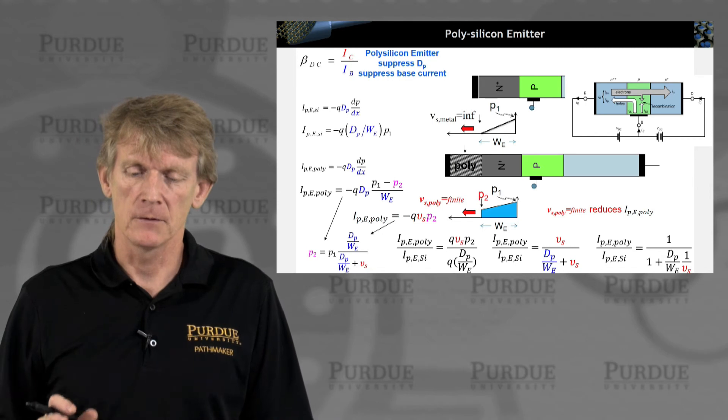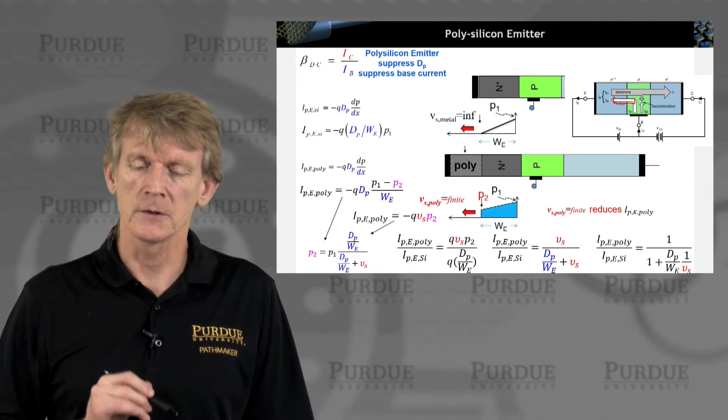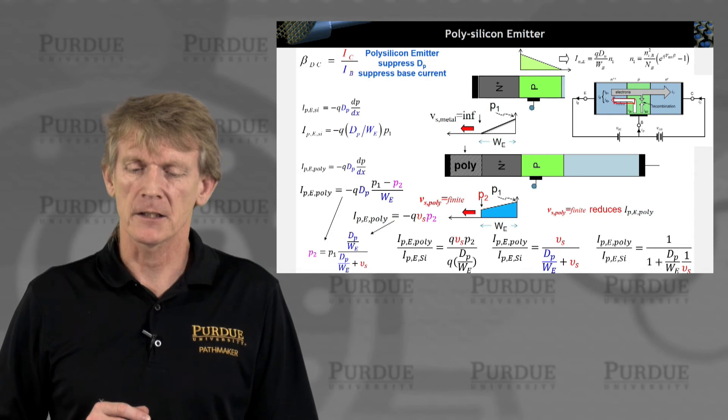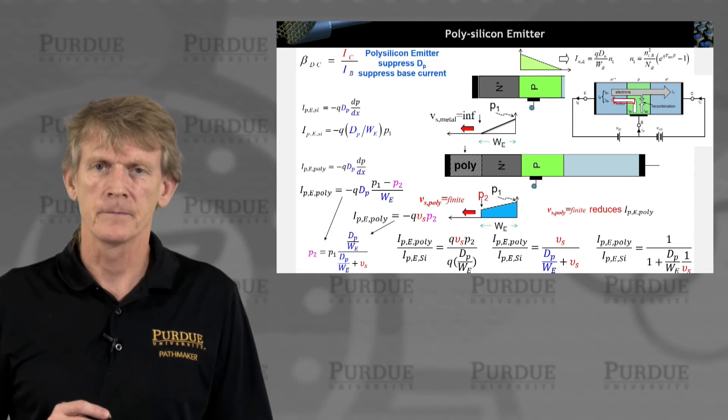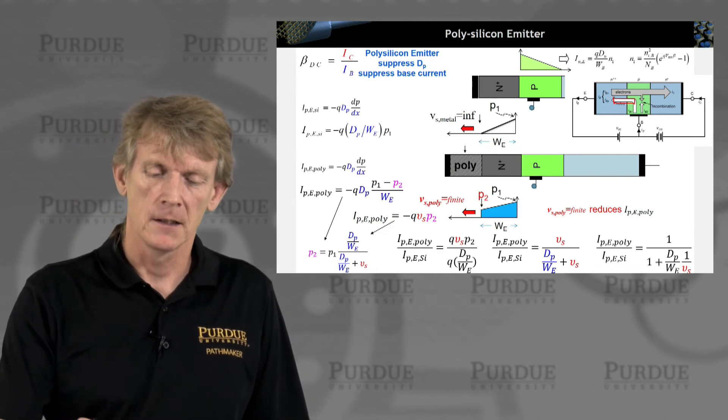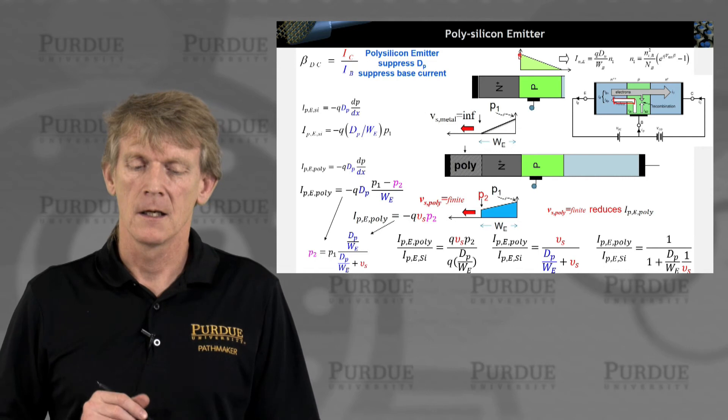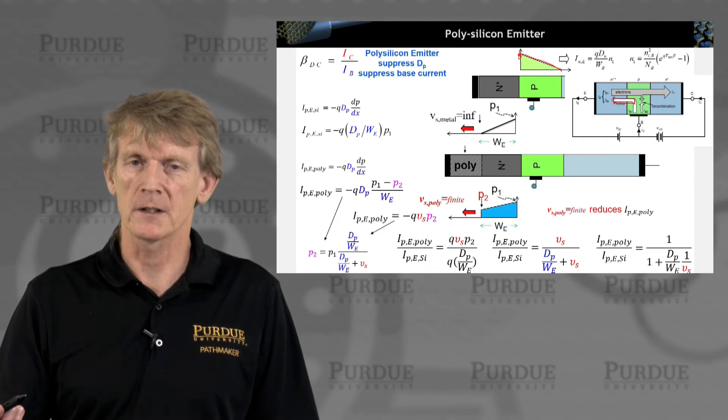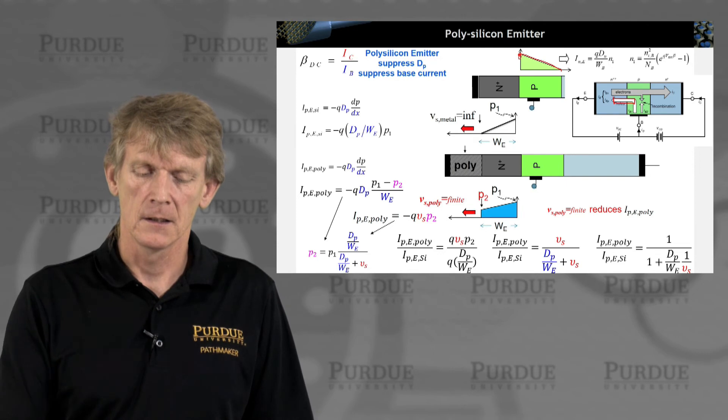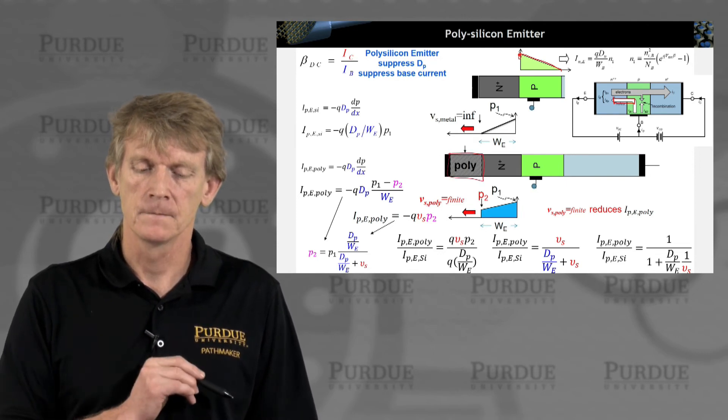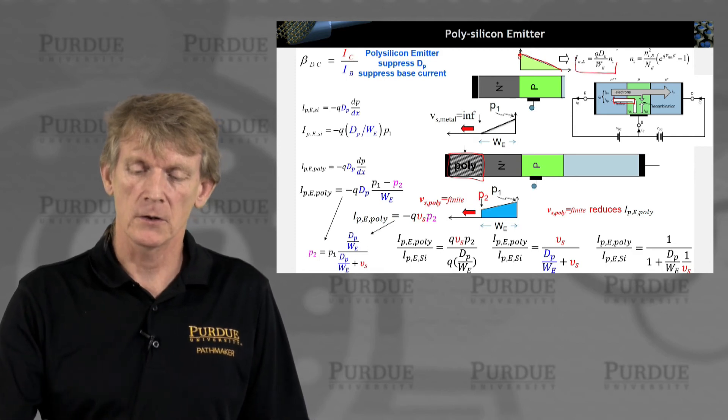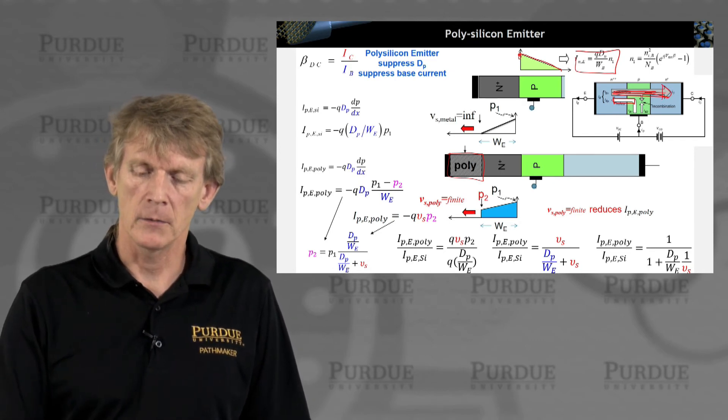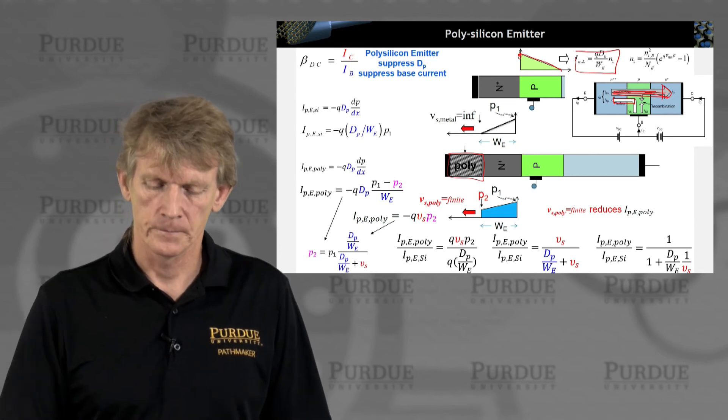Now, we have reduced this current component. Let's look at the forward component one more time. The electrons that are injected at this interface, are they affected? And the answer is no. We have calculated this before. This is now the minority carrier electrons in the P side. They drop linearly. Our expression for the current flowing that way is independent on what we did on the poly side. Make sense? So, this current component here, which we want, appears to be unaffected by our muckery here with the poly.